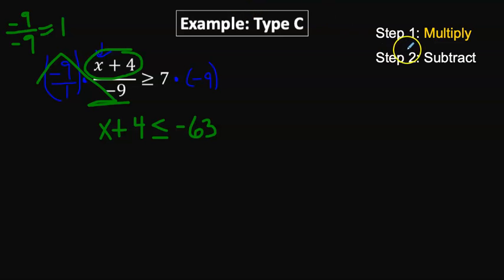Next, we're going to subtract. So the x and the 4 separated by addition, the inverse is subtraction. So we subtract 4 from the left side, we subtract 4 from the right side.